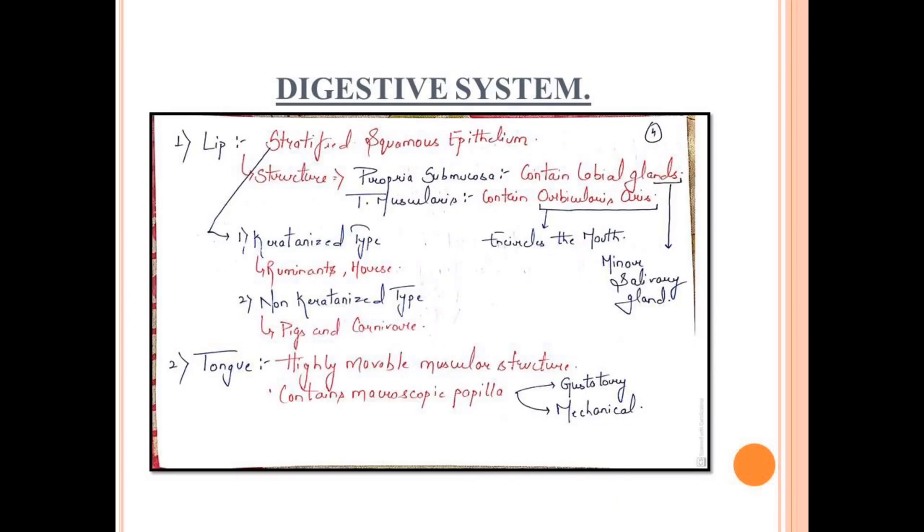Now moving to the components of the digestive system, we will start with the lips. Lips are lined by stratified squamous epithelium. It can be of two types: keratinized or non-keratinized. Keratinized examples are ruminants and horses, and non-keratinized examples are pigs and carnivores. The structure includes propria submucosa labial glands, which is a type of minor salivary gland. Tunica muscularis consists of orbicularis oris, which is a muscle in the circle of the mouth.